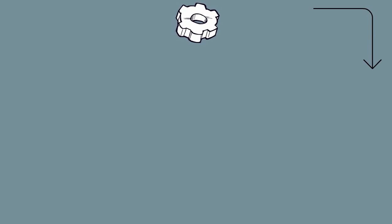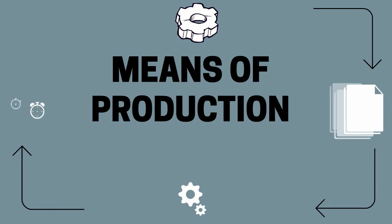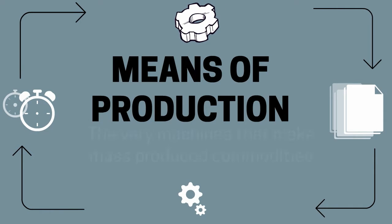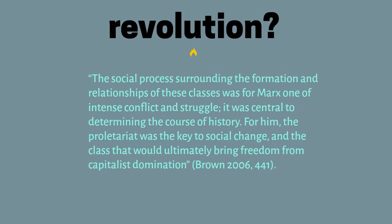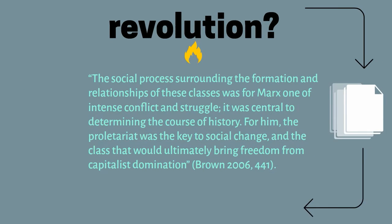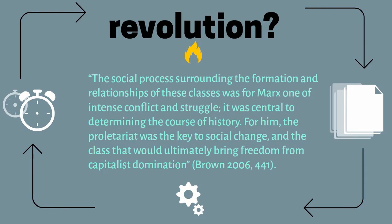However, the upper class were those people who own the means of production — that is, the very machines that make mass-produced commodities. As Brown explicates, the social process surrounding the formation of relationships of these classes was, for Marx, one of intense conflict and struggle, central to determining the course of history. For Marx, the proletariat was the key to social change and the class that would ultimately bring freedom from capitalist domination.